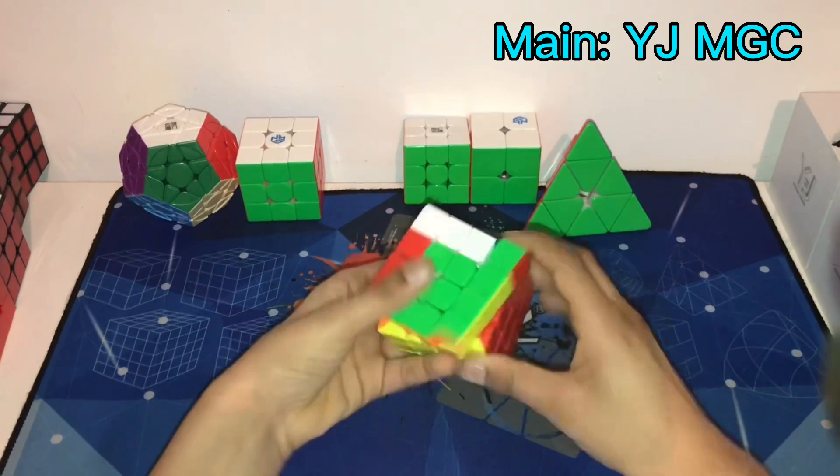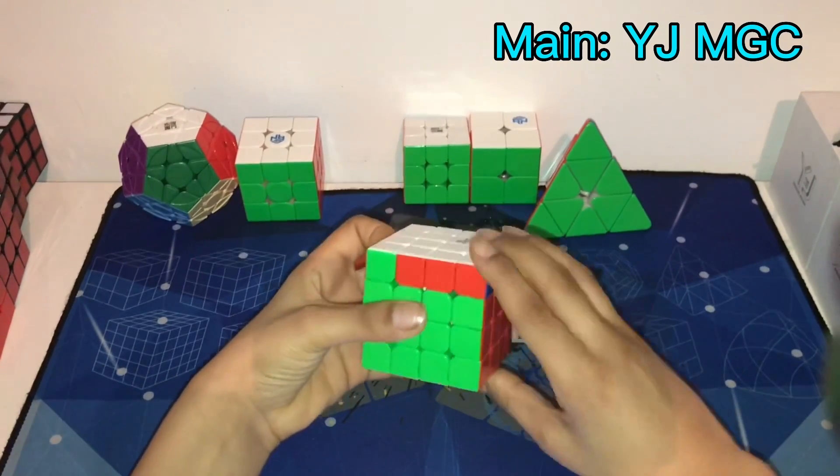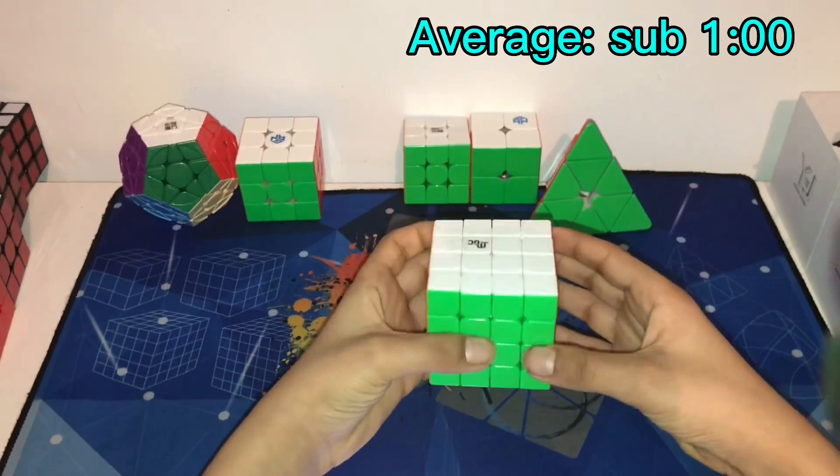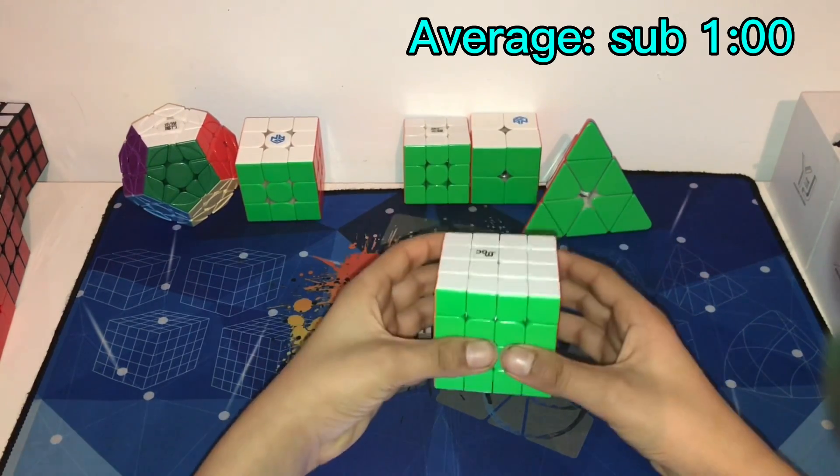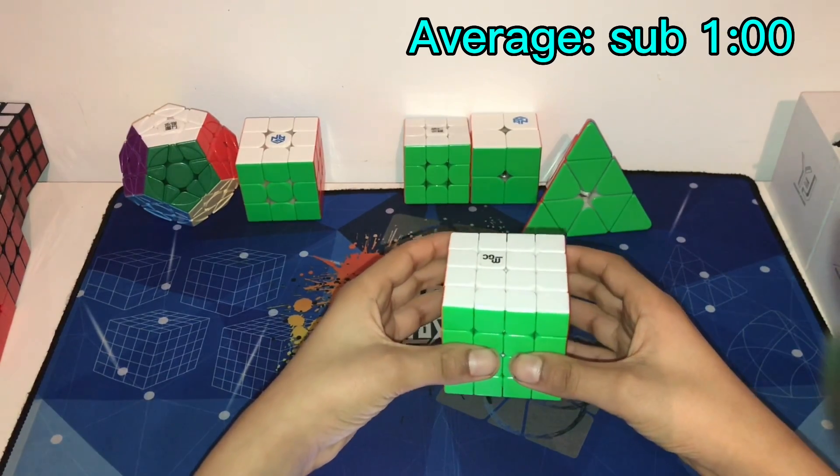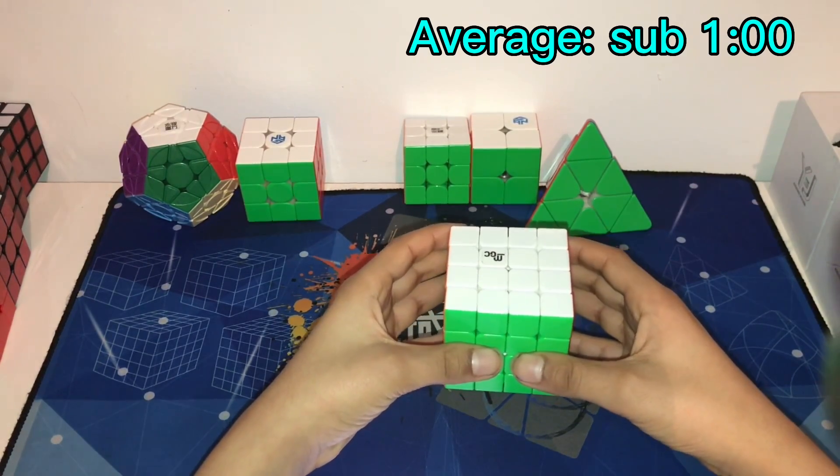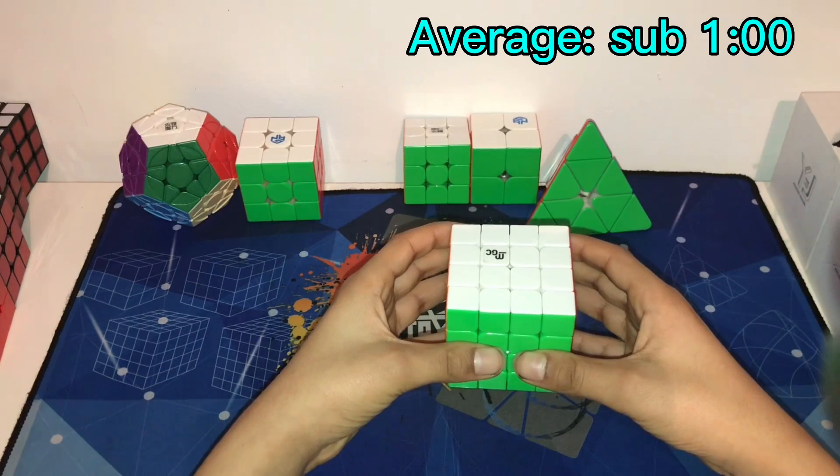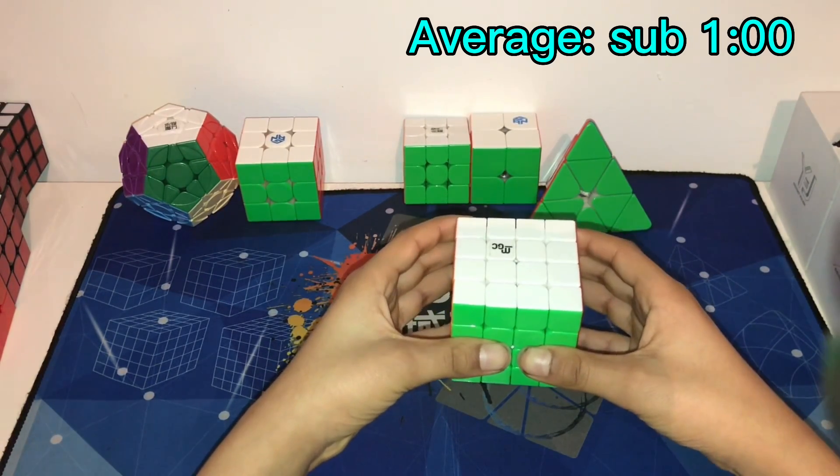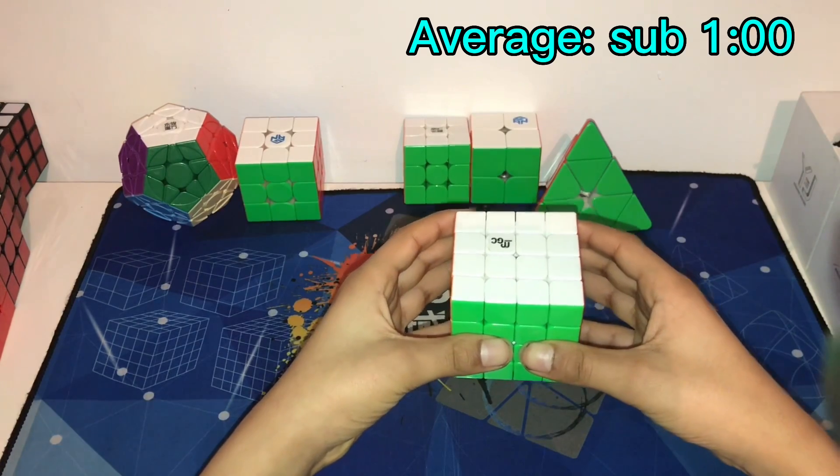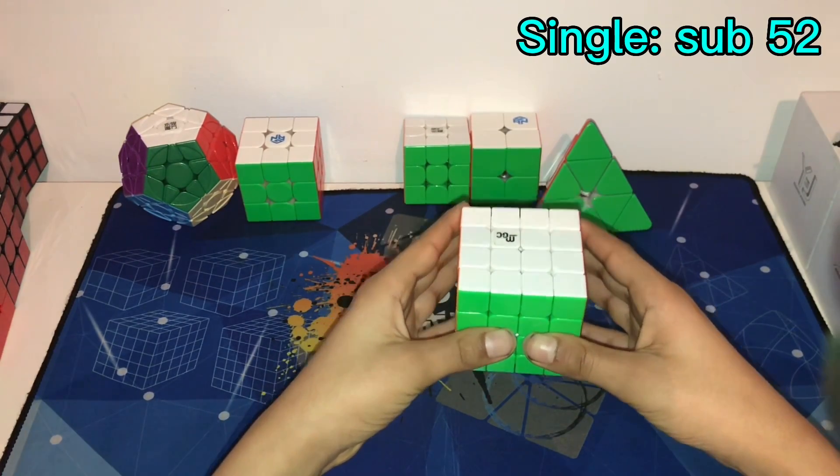Now for 4x4. I'm gonna main the YJ MGC. All my 4x4 results are extremely good for me. At the comp where I got these times, they were both almost 7 seconds faster than what my previous PRs were. My current PRs are a 54.07 average and a 46.49 single. The single being my 3rd best ever. These are ridiculous for me, so I'm not gonna aim for much. Just a sub 1 minute average and a sub 52 single.